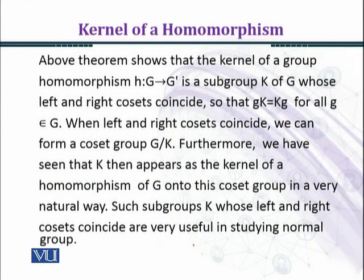Above theorem shows that the kernel of a group homomorphism h from G to G prime is a subgroup K of G whose left and right cosets coincide, so that gK = Kg for all g belonging to G. When left and right cosets coincide, we can form a coset group G/K, which is called the quotient group.